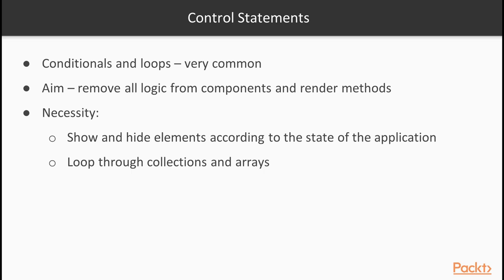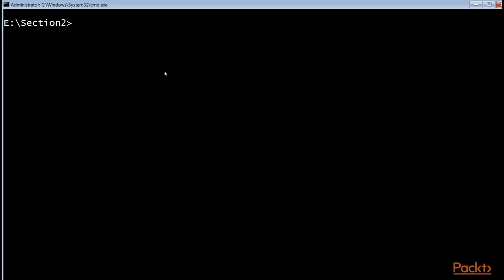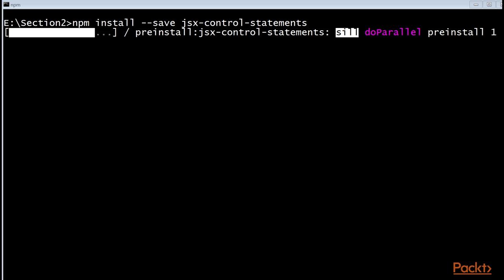Now we move on to control statements. Conditionals and loops are very common operations in UI templates, and you may feel wrong using the JavaScript ternary or the map function to perform them. In general, we aim to remove all the logic from our components and especially from our render methods. If you feel that using JSX for that kind of operation will make your code more readable, there is a Babel plugin available to do just that: JSX control statements. This goes through the same philosophy as JSX — it is just syntactic sugar that gets compiled into JavaScript. First, we install it with the provided command, then we add the plugin to the list of our Babel plugins in our .babelrc file.